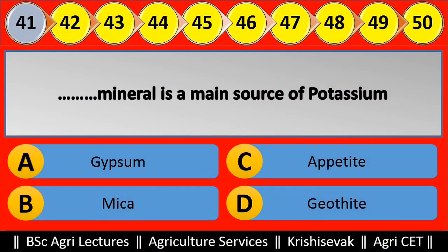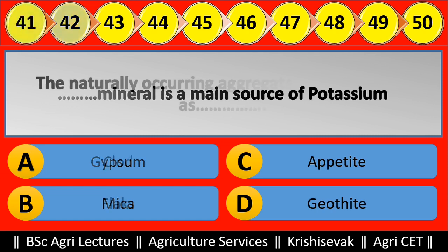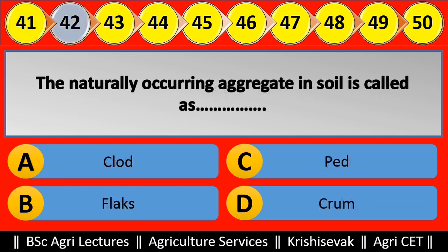Question 41: Blank mineral is the main source of potassium. Options are: (a) Gypsum, (b) Mica, (c) Apatite, (d) Goethite. Right answer is Mica, option B. Question 42: The naturally occurring aggregate in soil is called blank. Options are: (a) Clod, (b) Flask, (c) Ped, (d) Crumb. Right answer is Clod, option A.